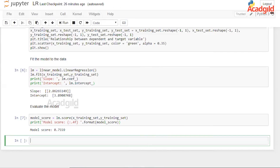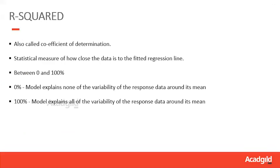We can use the library's score function to find the score of the model, which determines how much of the variability in the data is explained by the model. The model score calculated was 0.7559. This score is called the coefficient of determination — a statistical measure of how closely the data is fitted to the regression line. The value is between 0 and 100%, and it shows how effective the model is in modeling the variability of the response data about its mean.